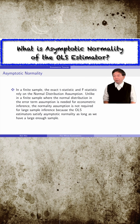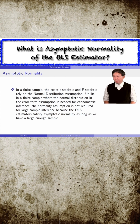In other words, even though the outcome variable y is not from a normal distribution, we can still use the t-statistics and the f-statistics to determine the significance of the estimates.